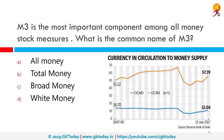M3 is the most important component among all money stock measures. What is the common name of M3? The correct answer is broad money. In economics, broad money is a term denoting a certain measure of the amount of money in a national economy, used depending on local practice.